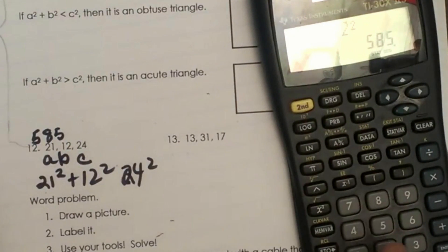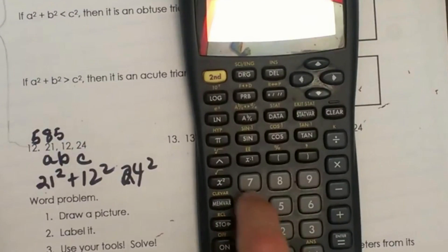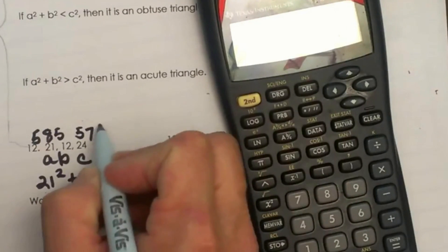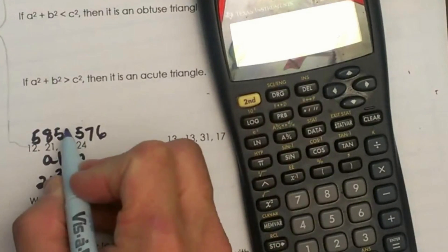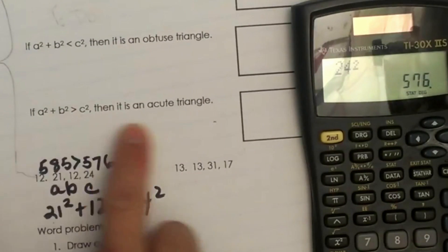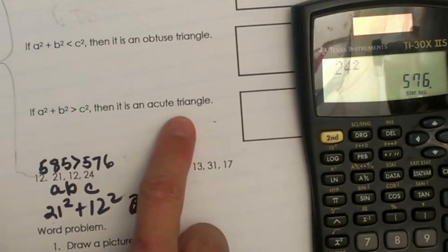Now let's take 24 and square it. So 24, hit my square button, and I get 576. Now C is less than A squared plus B squared. So that means it falls into this category. That means it is an acute triangle.